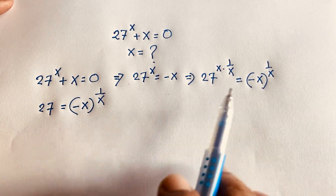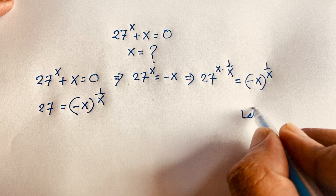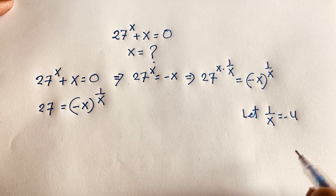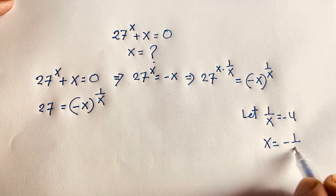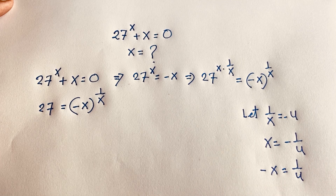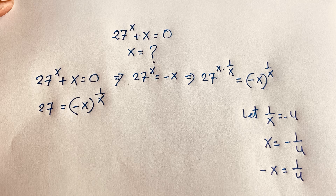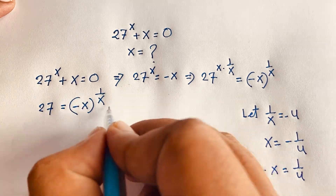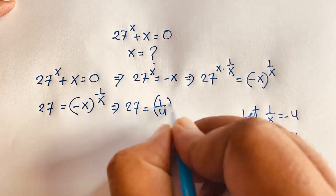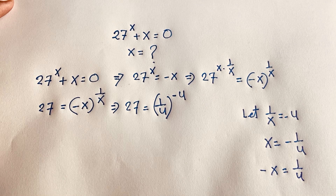If I evaluate this equation, here is 1 over x. So let 1 over x equal minus u. Then x is equal to minus 1 over u. And minus x it will be 1 over u. So 1 over x becomes minus u and minus x becomes 1 over u. If I substitute this into the expression, we get: 27 equals (1/u) to the power minus u.